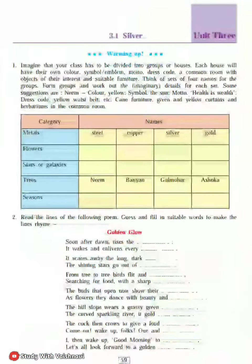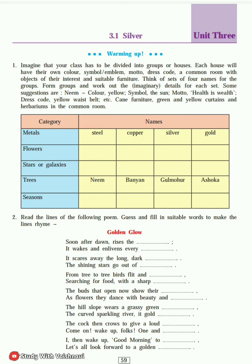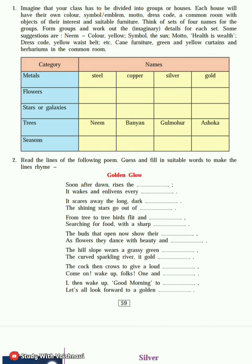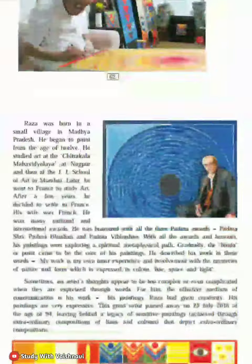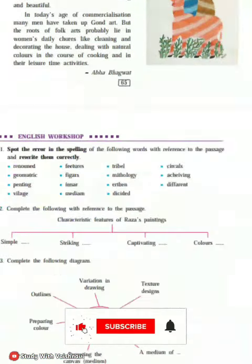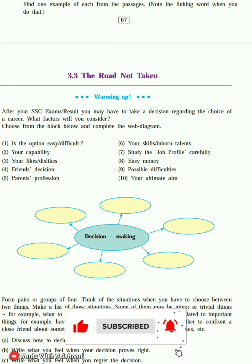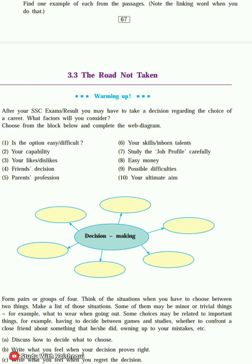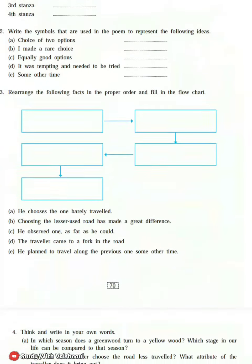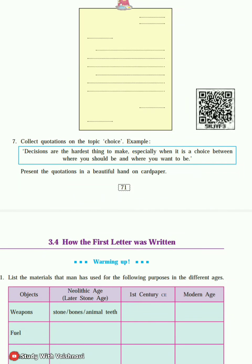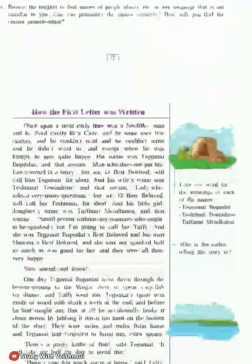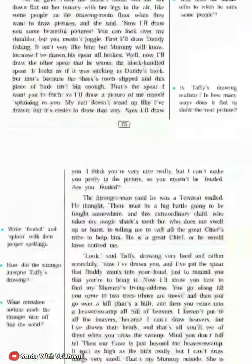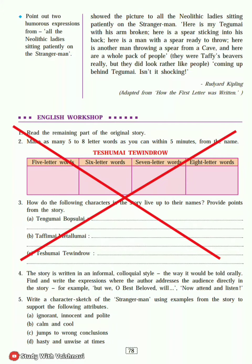Unit 3: 3.1 - 'Silver', that poem - nothing is reduced. 3.2 - 'Reading Works of Art' - nothing is reduced. 3.3 - 'The Road Not Taken', that poem - nothing is reduced. 3.4 - 'How the First Letter Was Written' - English workshop page number 78, questions number 1, 2, and 3 were reduced from the syllabus.